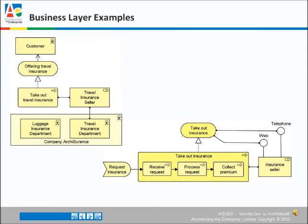This process offers a service offering travel insurance. If we take the other example, we're actually decomposing that same process — take-out travel insurance — and we have each sub-process triggering the next sub-process. The event request insurance triggers the first sub-process. You see the little arrows with the filled-in arrow tip — those are triggers. A particular role, insurance sellers, is assigned to perform the work. And the process realizes a take-out insurance service, which is made available by interfaces: web and telephone.